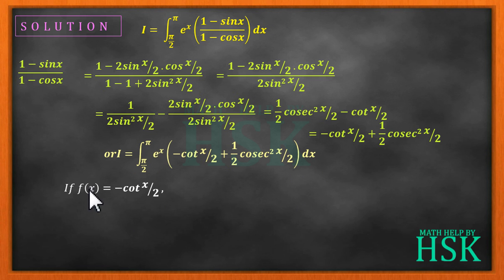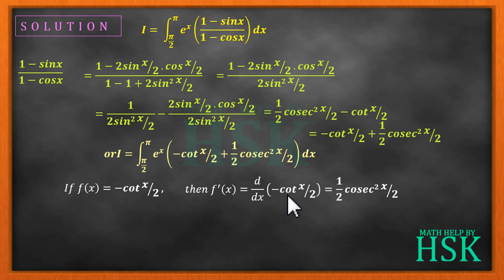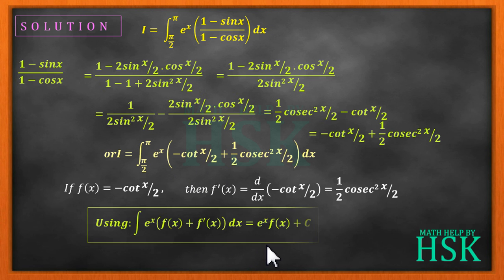Now if f(x) is assumed to be minus cot(x/2), then f'(x) equals d/dx of minus cot(x/2). The differentiation of minus cot(x/2) gives plus cosec²(x/2) times (1/2) — since differentiation of cot is minus cosec², and the chain rule gives 1/2 — so f'(x) equals (1/2)·cosec²(x/2).